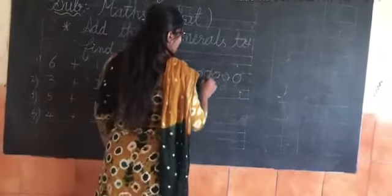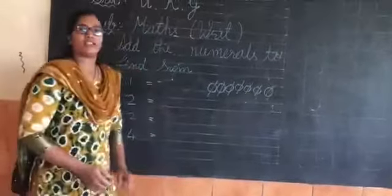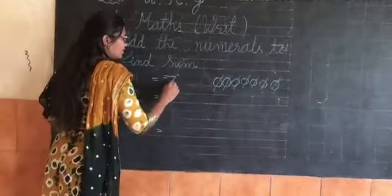Then count together. One, two, three, four, five, six, seven. So answer is seven. Write here seven.